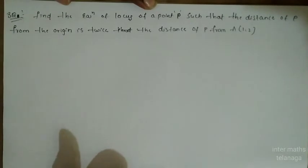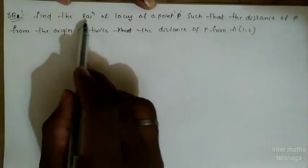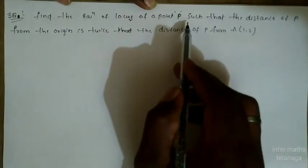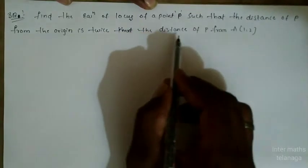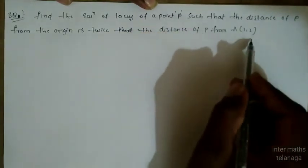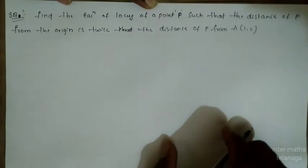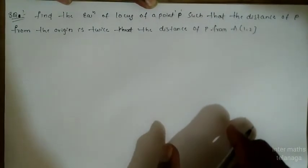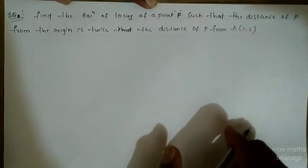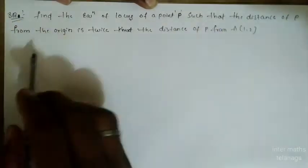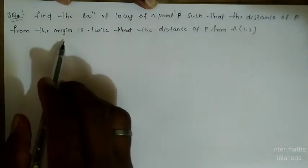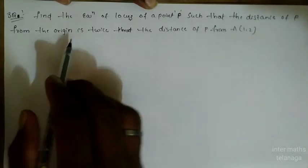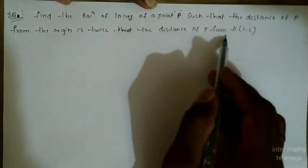See here what the question is first. Find the equation of locus of a point P such that the distance of P from the origin is twice the distance of P from A(1, 2). We have to find out the equation of locus, such that the distance of P from the origin is twice the distance of P from A.